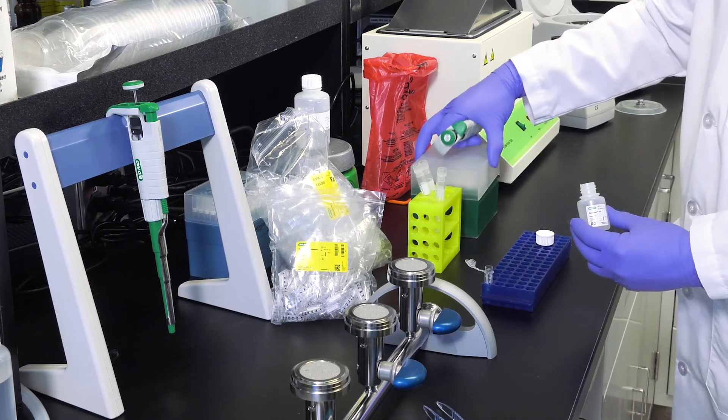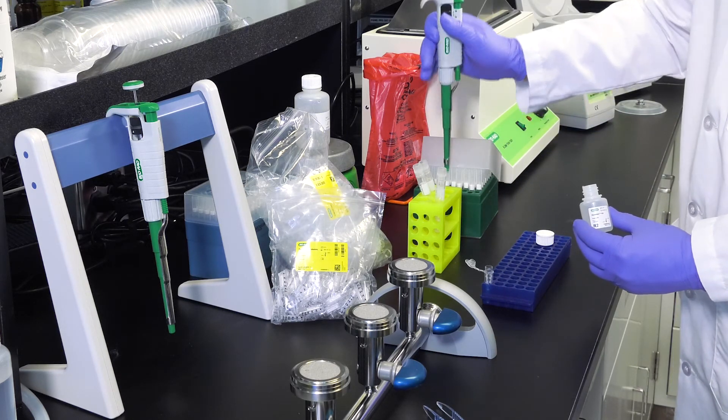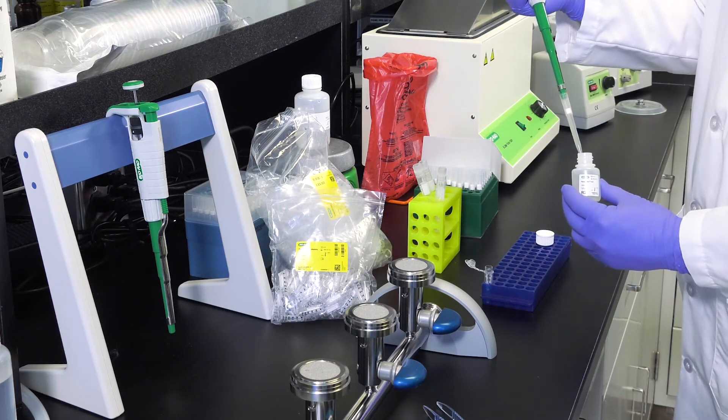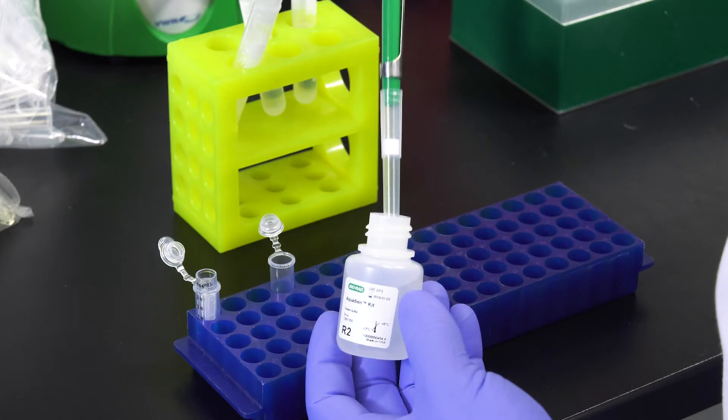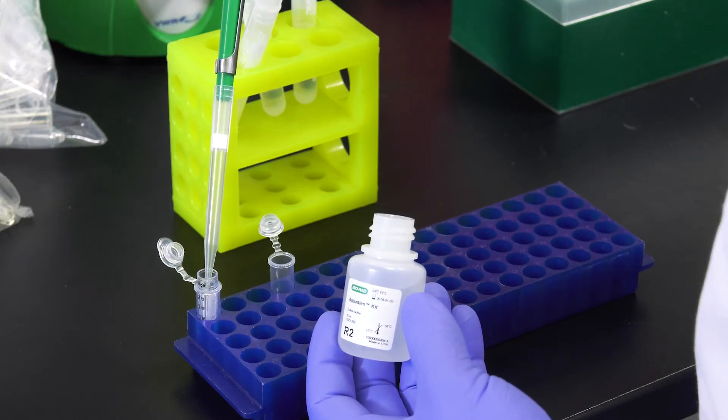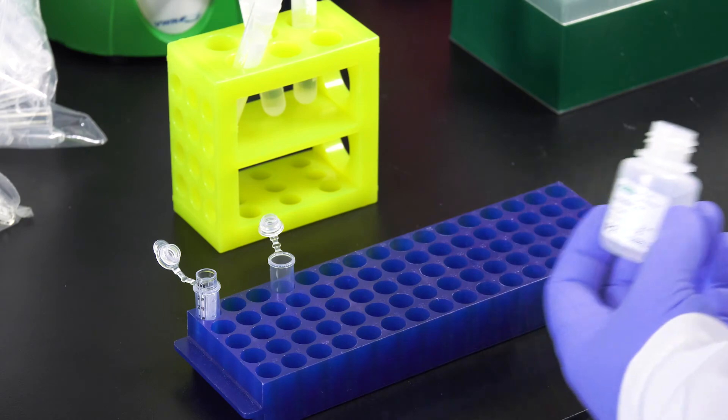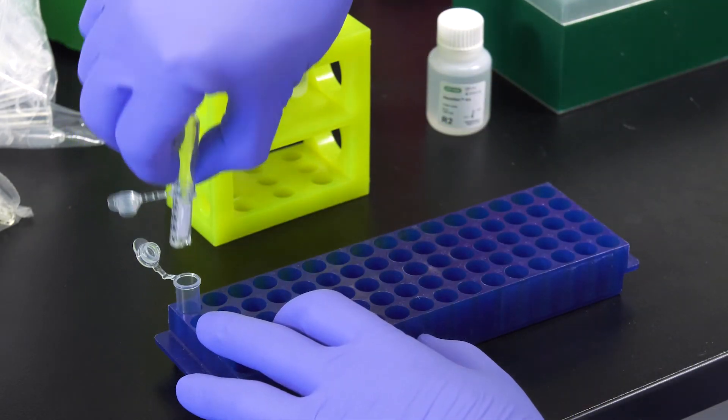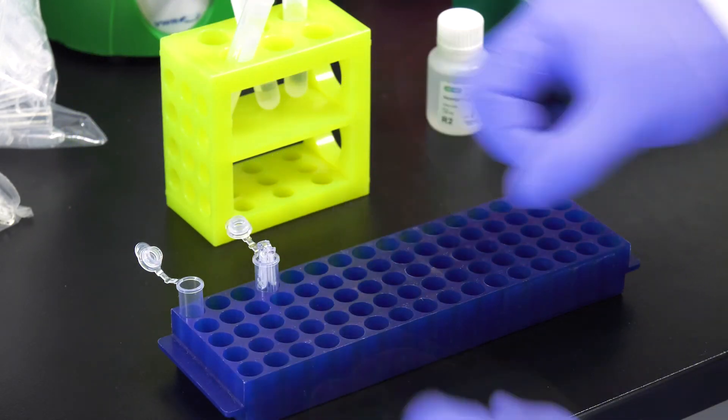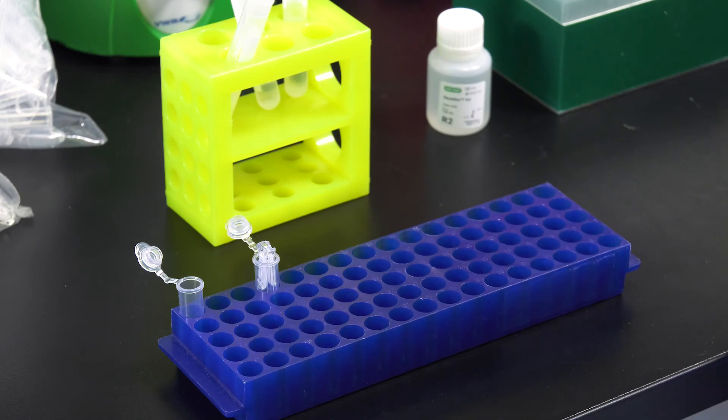The next step is to elute the DNA from the column. To do this, add 100 microliters of R2 solution to the purification column and throw away the collector tube. Cover the purification column with a clean collector tube and turn the whole thing upside down, transferring the column to a new tube.